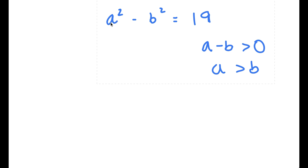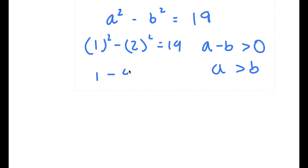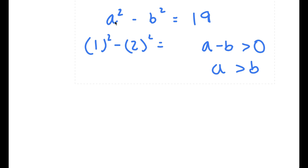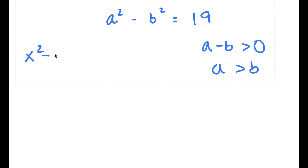Because if a was less than b — say a is 1 and b is 2 — then 1 squared minus 2 squared gives 1 minus 4, which is a negative number. But a squared minus b squared here is positive, and the only way for that to be positive is if a is greater than b. Now, if I have something in the form x squared minus y squared, this is simply equal to x plus y times x minus y.